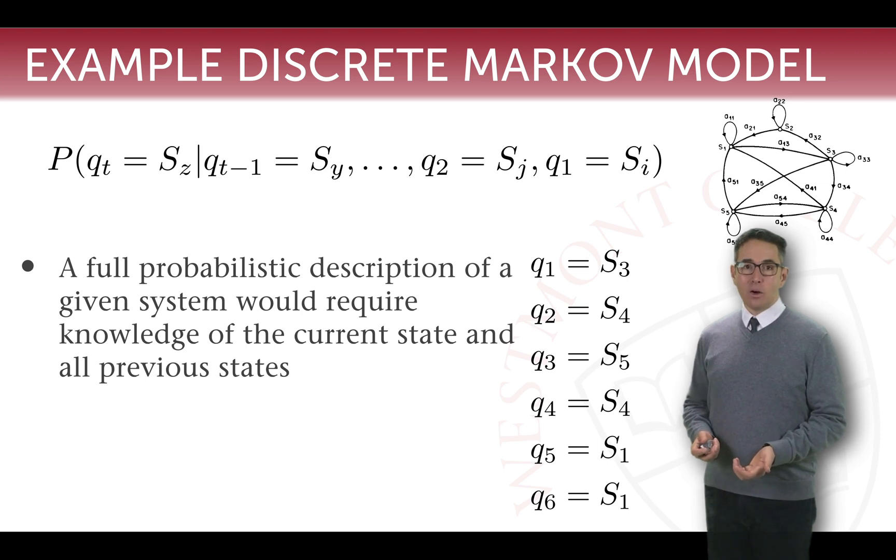Because generally speaking, what state we are in at time qt could depend on any of the previous states that we were in. So a full probabilistic description of a given system would require knowledge of the current state qt and all the previous states.